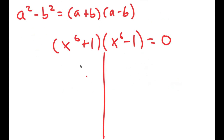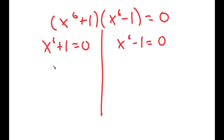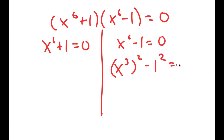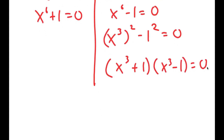This gives me two equations: x to the power of 6 plus 1 equals 0, and x to the power of 6 minus 1 equals 0. I'm going to do the same thing again — rewrite x to the power of 6 minus 1 equals 0 as x to the power of 3, squared, minus 1 squared equals 0. Using the difference of squares property again, I get x to the power of 3 plus 1, times x to the power of 3 minus 1, equals 0.